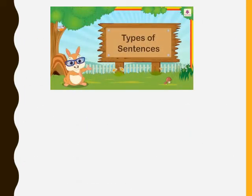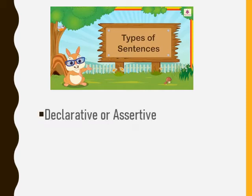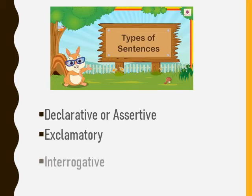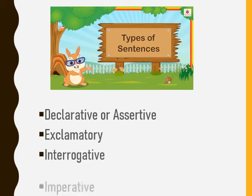Let's discuss the types of sentences. There are four types of sentences: declarative or assertive, exclamatory, interrogative, and imperative.